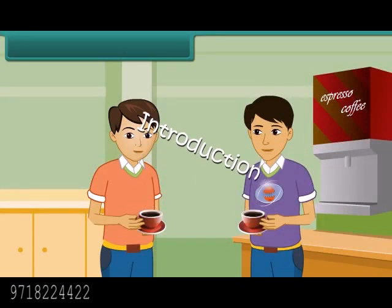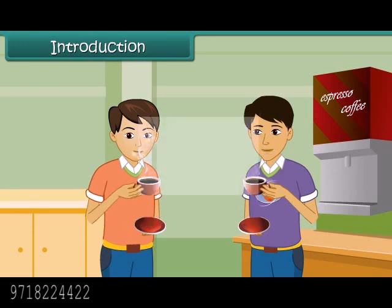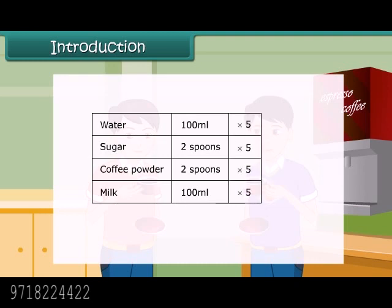Introduction: Michael prepares coffee for himself and his friend. He uses 100 milliliters of water, two spoons of sugar, two spoons of coffee powder, and 100 milliliters of milk. How much quantity of each item will he need if he has to make coffee for ten people? If each ingredient is multiplied by five, then he can prepare coffee for ten people.